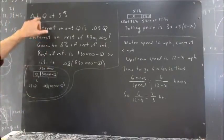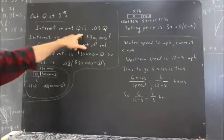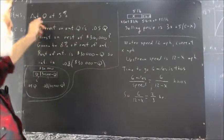If you invest amount Q at 5%, then the interest on that amount, and should be pretty clear, is 5% of what you invest.